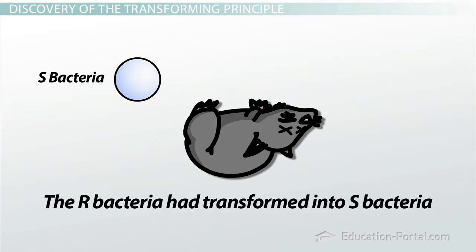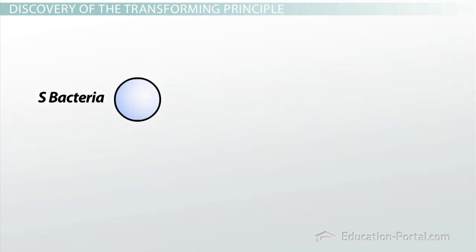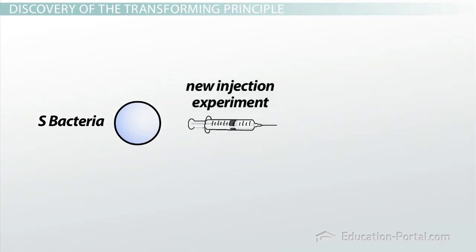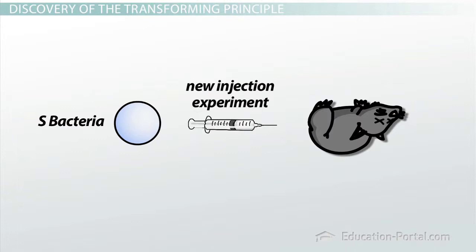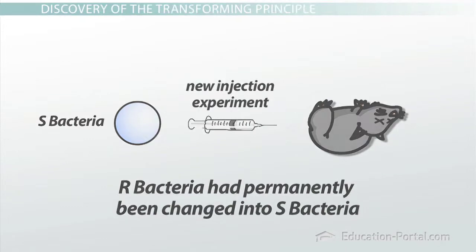Somehow, the R-bacteria had transformed into S-bacteria. This transformation was permanent, meaning it was a trait that was inherited from generation to generation. Using the mysterious new S-bacteria from the dead mouse in a new injection experiment also produced a dead mouse. That meant that the R-bacteria had permanently been changed into S-bacteria.